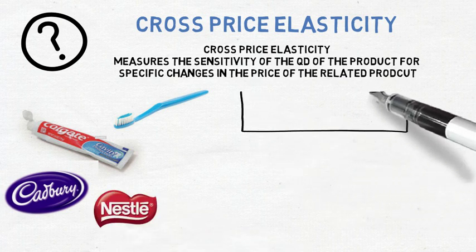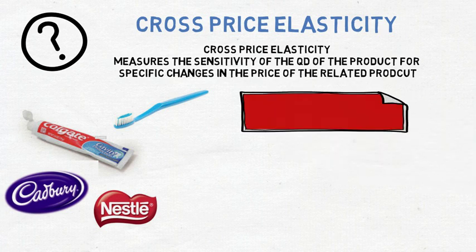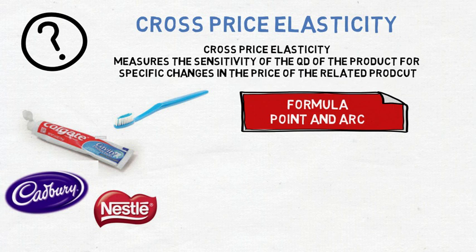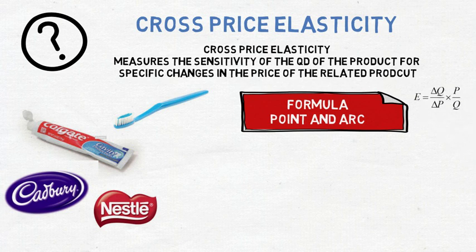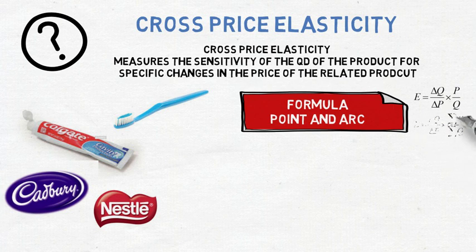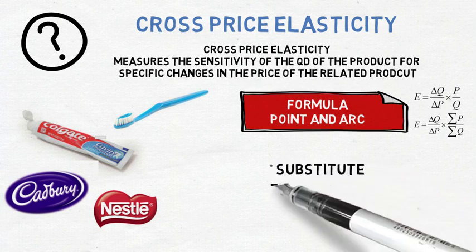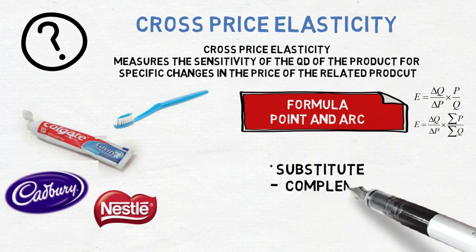The same formulas used to calculate price elasticity of demand are used to calculate cross-price elasticity: the point formula and the arc formula. Again, it is extremely important to categorize your answer. With cross-price elasticity, if you obtain a positive answer, you are dealing with a substitute product. If you obtain a negative answer, you are dealing with a complementary product.